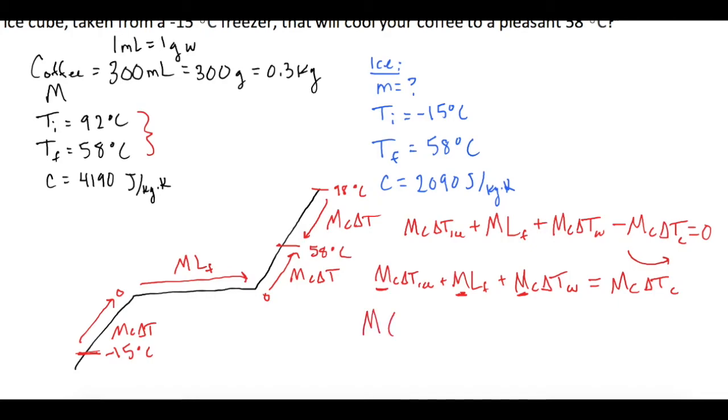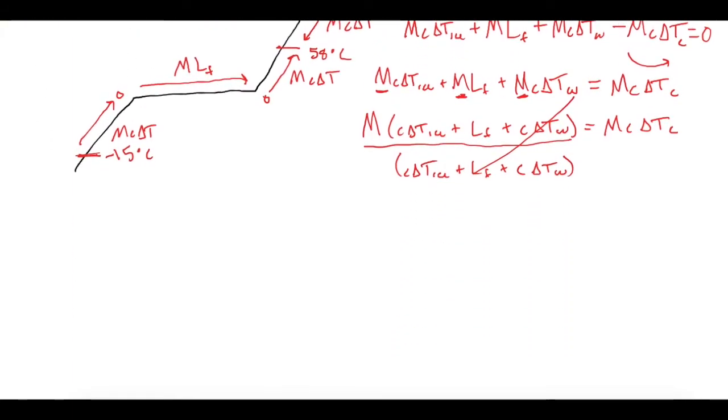So now mass times C delta T for ice plus the latent heat of fusion plus C delta T of water is equal to M C delta T for the coffee. Now we divide both sides by all of this. We'll give us the mass of the ice cube. So M is equal to M C delta T for coffee all over C delta T for the ice plus latent heat of fusion plus C delta T for the water.